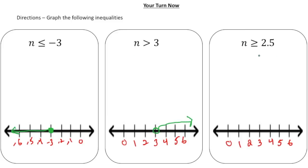The last one — I gave you a mixed number. Here we have n is greater than or equal to 2 and a half. Notice on each number line I put integers, so 2 and a half is going to fall between 2 and 3. We put a closed circle between 2 and 3 — we'll call that 2 and a half — and draw the arrow to the right.